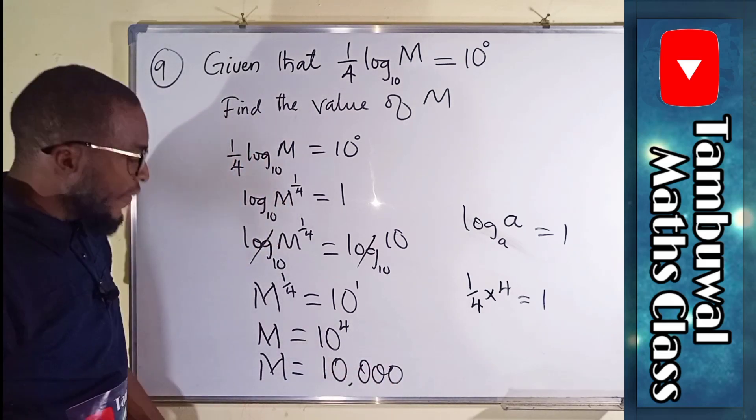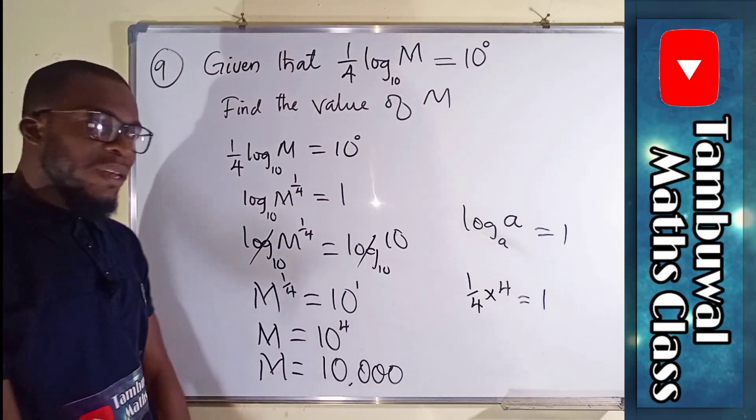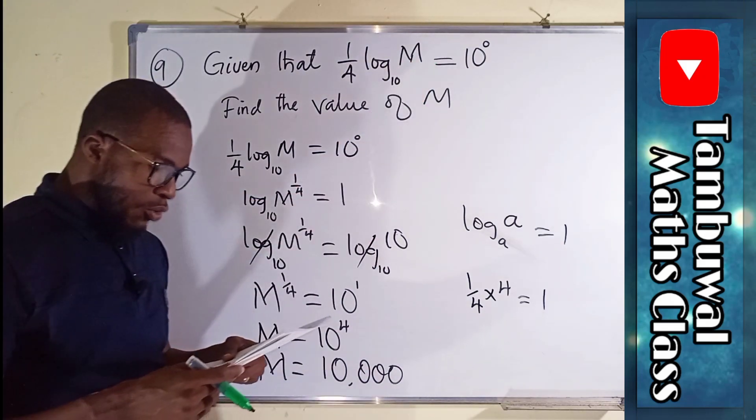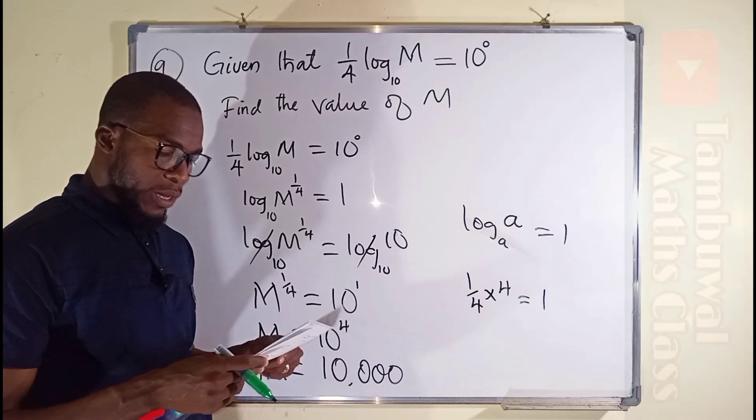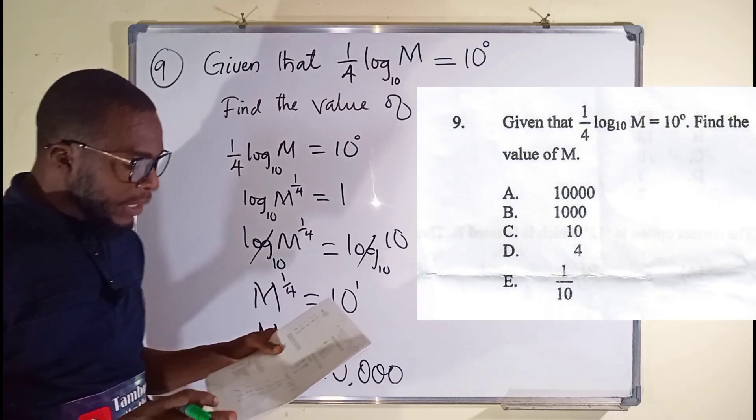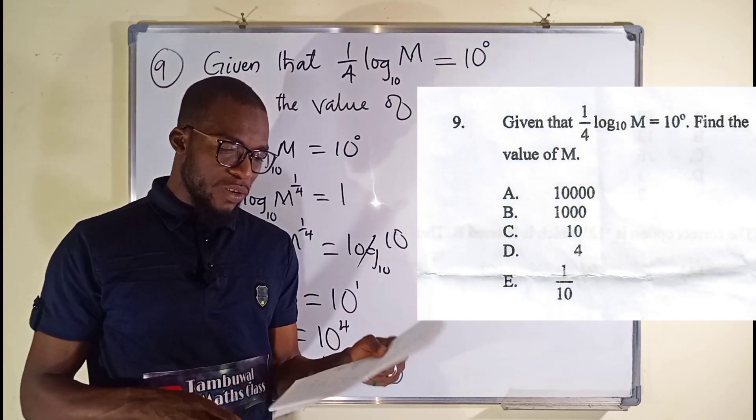And the value of M in this equation is 10,000, which is the option A, 10,000. Now let us look on to question number 10.